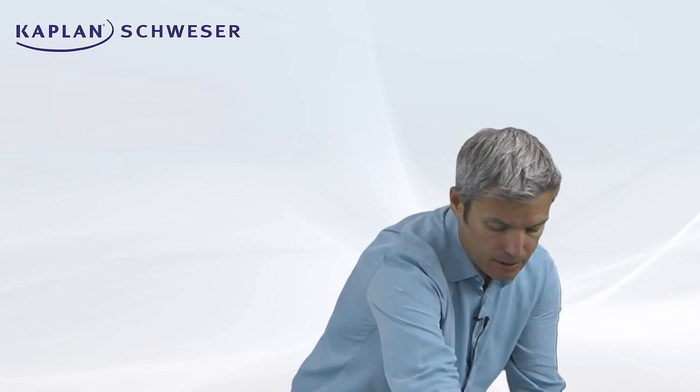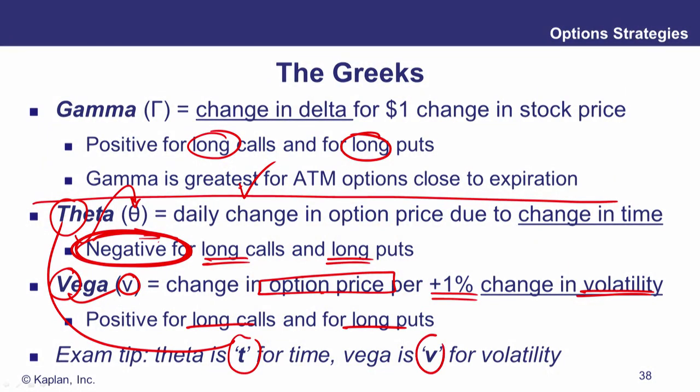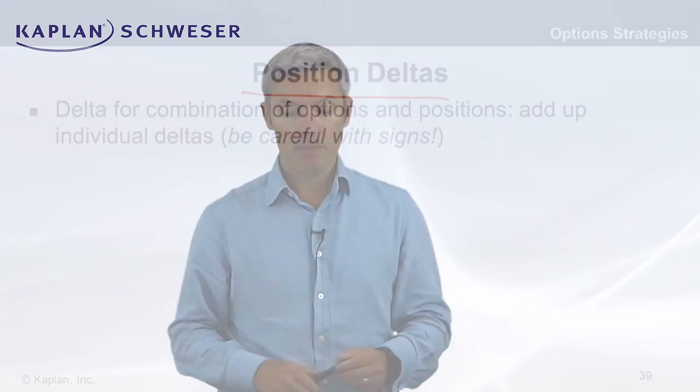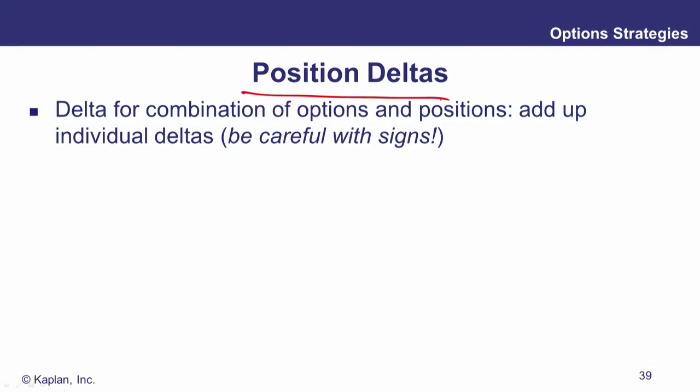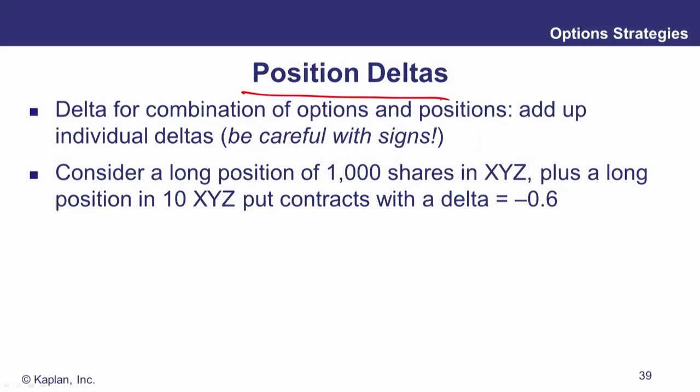Once we've got the basics of our Greeks lined up, we can think about our overall Greek exposure for a combination of different positions. Position deltas is a simple idea: combine different positions and sum up the deltas to get an overall net exposure. Be careful with signs — calls have a positive delta and puts have a negative delta.